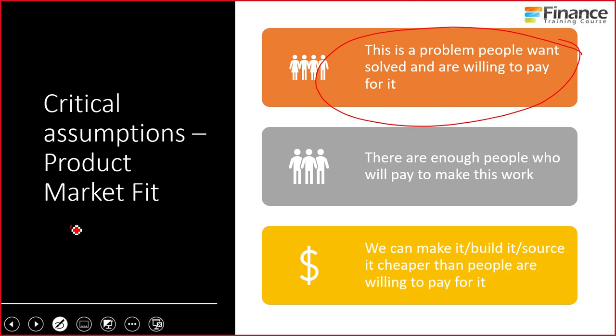The second part is: are there enough people who will pay to make this work for you? You want to write a book, you speak to five people and they all say yes, I'll buy it — but those five may be your friends, cousins, family members, relatives. Is there a big enough market outside of that? How many copies do you need to sell to break even? If you need to earn $12,000 a year, that's about $1,000 a month. If you make $10 per copy, you need to sell about 1,200 copies — about 100 copies a month.